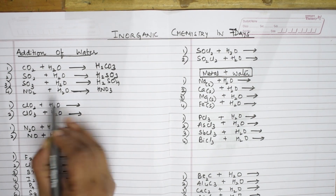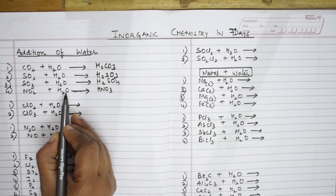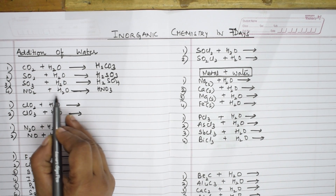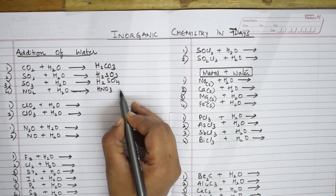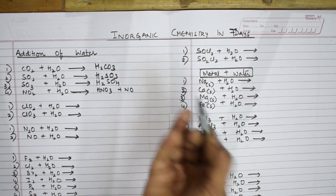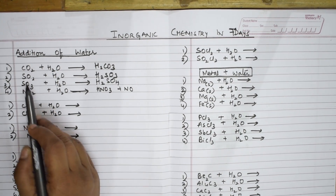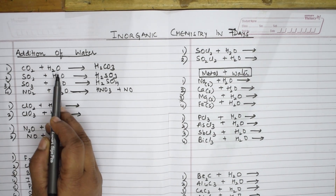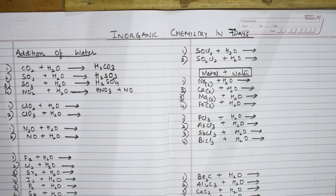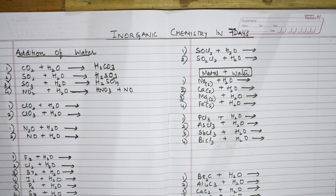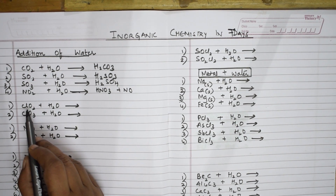When you balance the NO2 plus water reaction, along with nitric acid HNO3 you also get NO as a product. Remember this first sequence: any gas reacting with water forms the respective acid. Simple, isn't it?